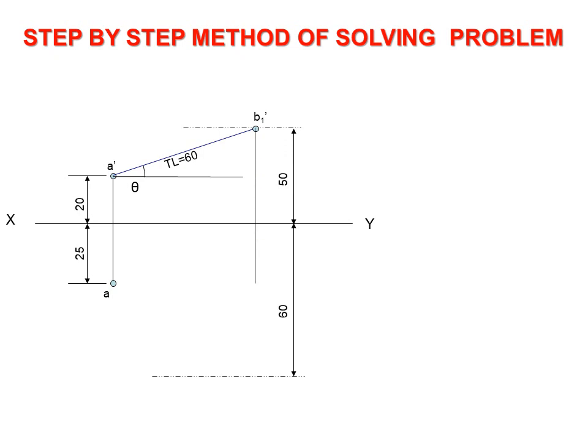The top view length ab1 is obtained by projecting b1' downwards. Rotate the top view ab1 to the required position by taking a as center and ab1 as radius to get the intersection of point b with locus of b. Join a and b to complete the top view of the line.